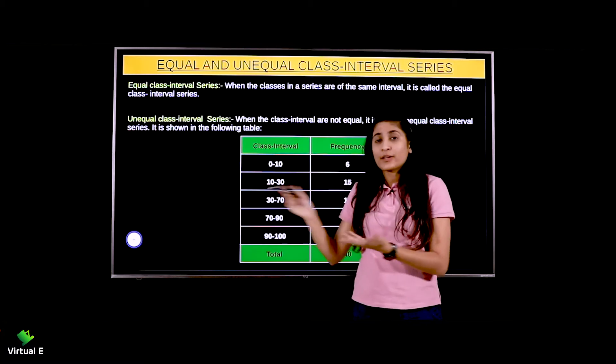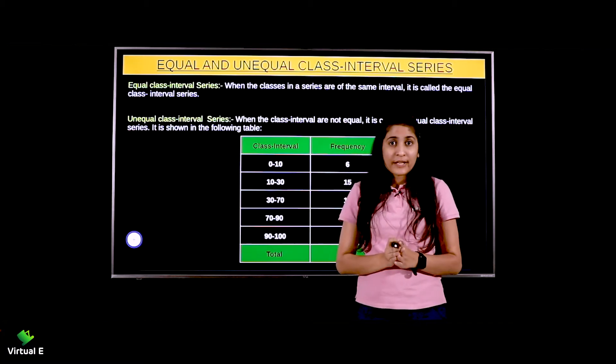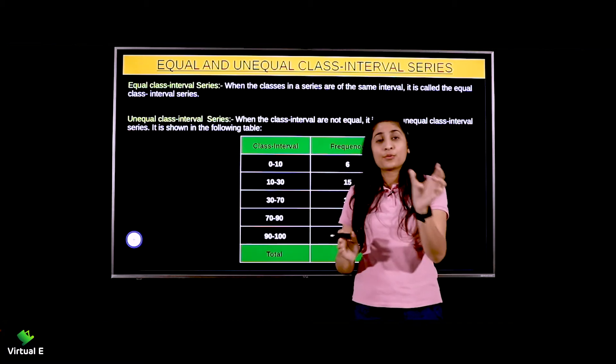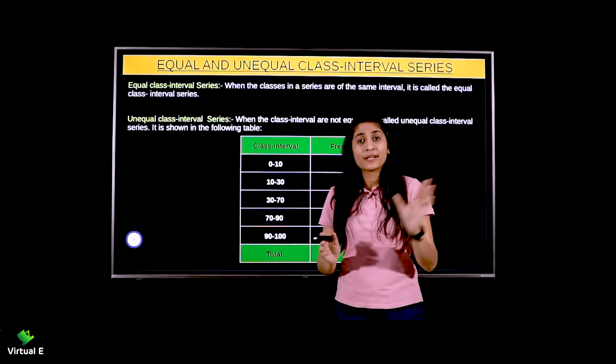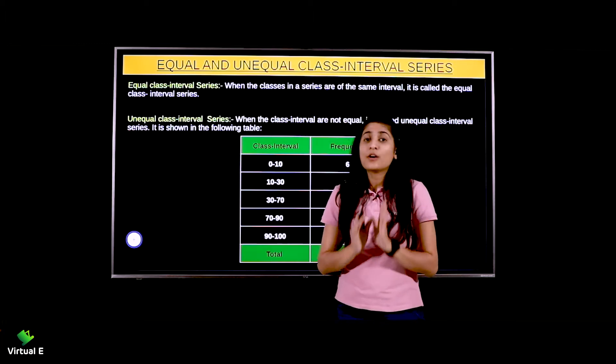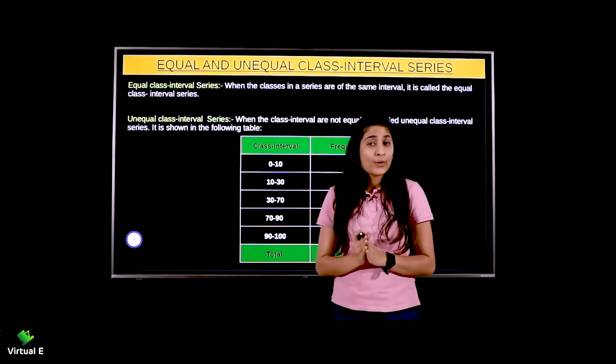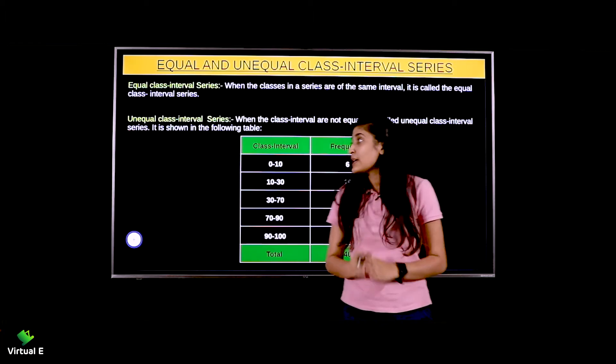That means the regular sums we have done, where 0 to 10, 10 to 20, 20 to 30 was given — that was our equal class interval.